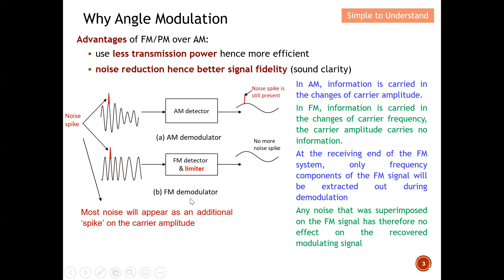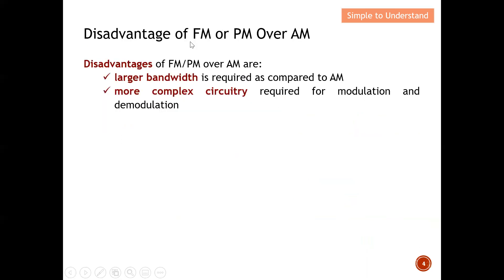Let's look at the disadvantages of FM or PM over AM. Firstly, FM or PM requires a larger bandwidth to send the same amount of data compared to amplitude modulation. Another disadvantage is that FM and PM require much more complex circuitry compared to AM. However, the advantages of FM and PM over AM definitely outweigh these disadvantages, which is why you will not see much application of amplitude modulation anymore — the majority will be frequency modulation or phase modulation.